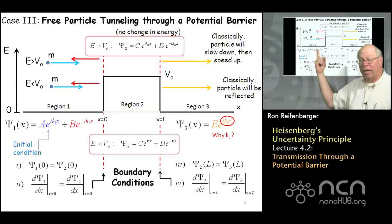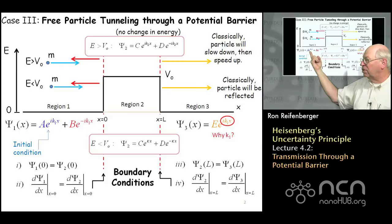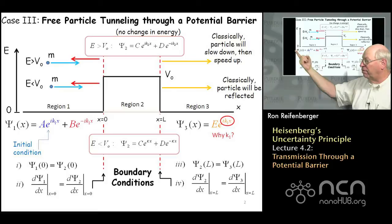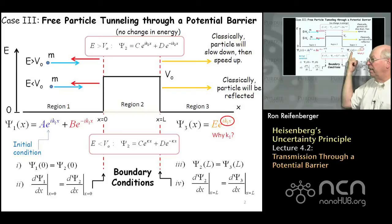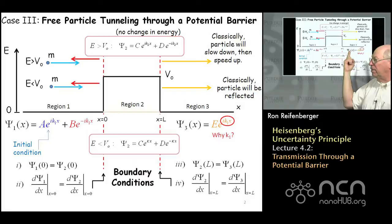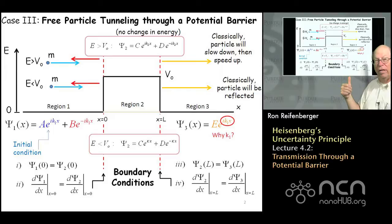Just like in the previous lecture, we have a particle moving from left to right with wave function A·e^(ik₁x). The particle reflected from the barrier, traveling from right to left, has wave function B·e^(-ik₁x). The transmitted particle also has a free particle wave function with the same k vector, because there's no energy lost as the particle transmits through or passes over the barrier — the total energy of the particle is conserved, there's no energy loss mechanism.